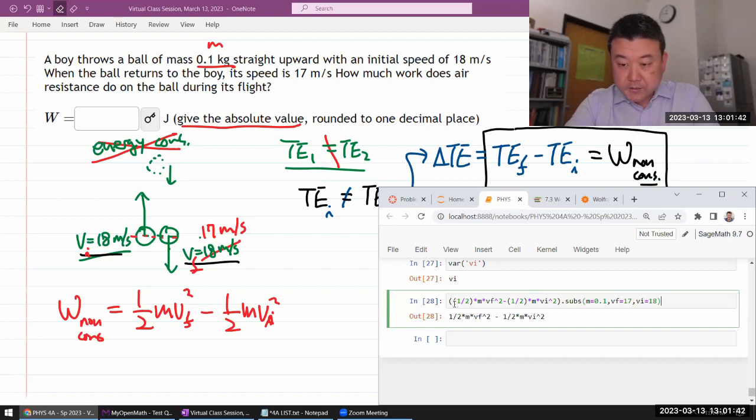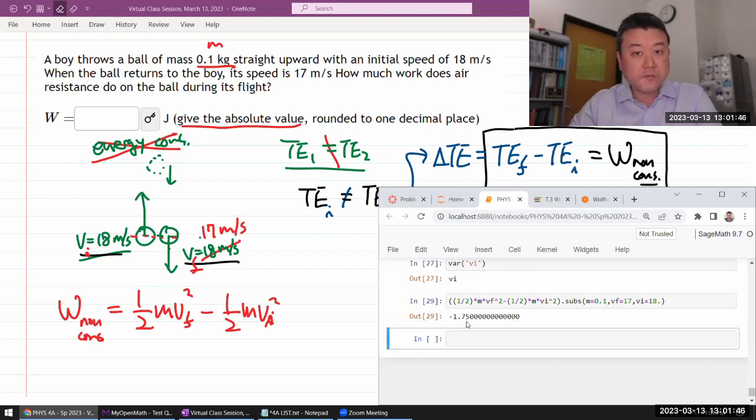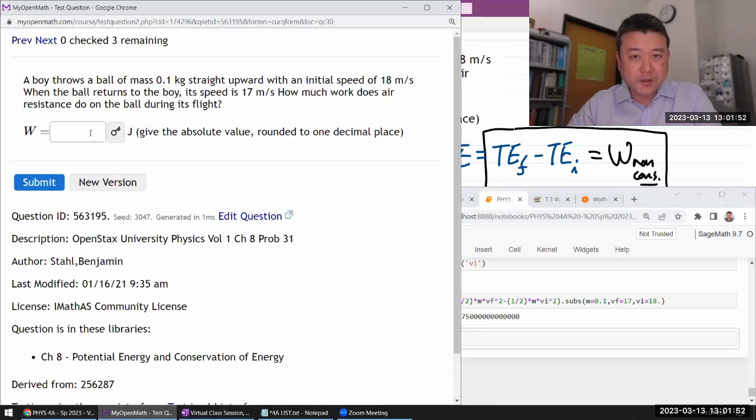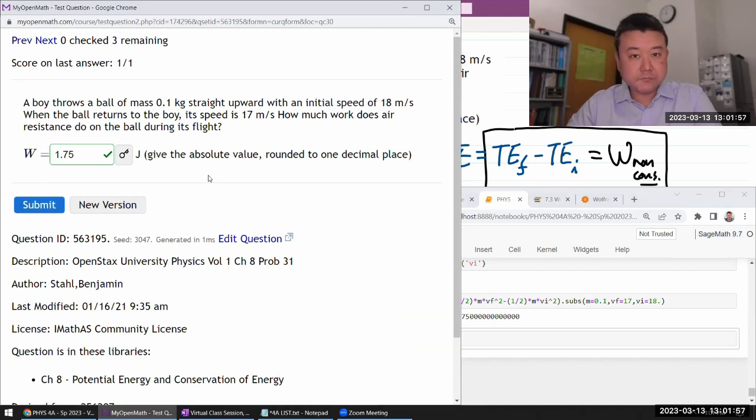And yeah, minus 1.75 joules. It says round but let me try not rounding and see if it accepts that. 1.75, yep I guess that's fine.